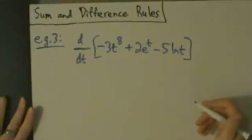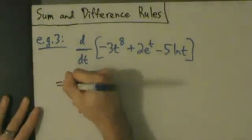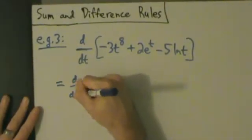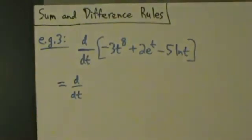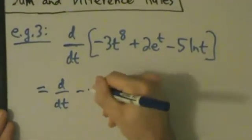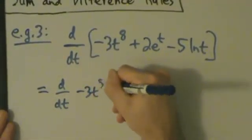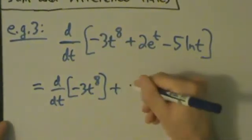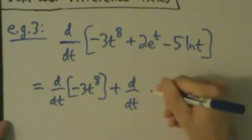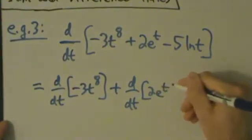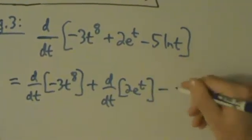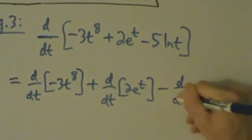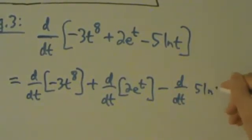So this is going to equal d/dt of -3t^8 plus d/dt of 2e^t minus d/dt of 5ln(t).